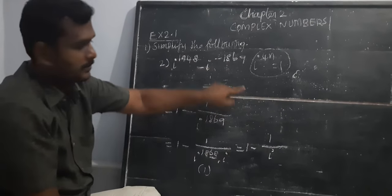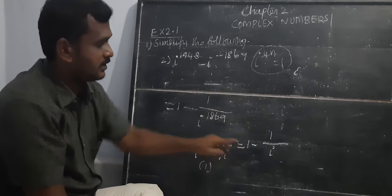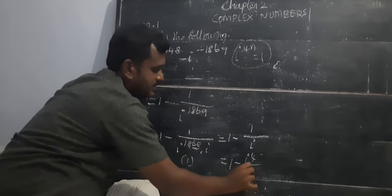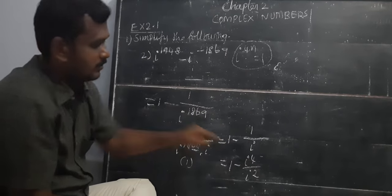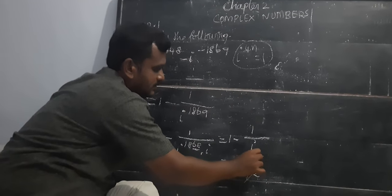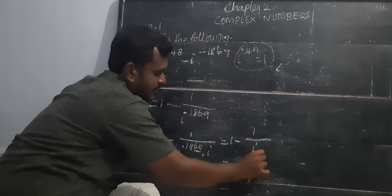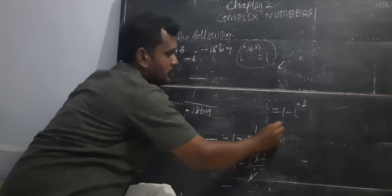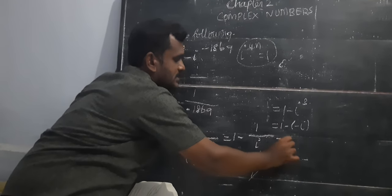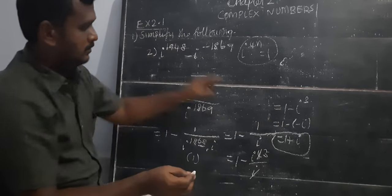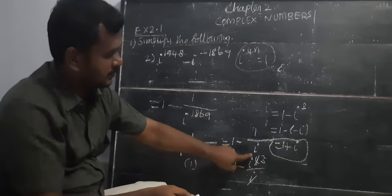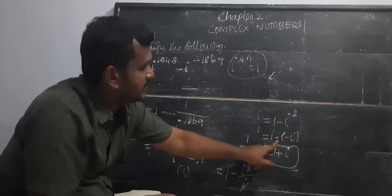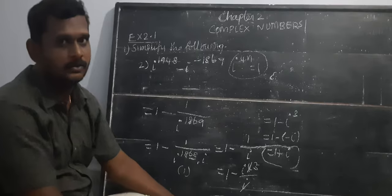Now we need to bring this into the form x plus iy, but 1 minus 1 over i is not yet in that form. So instead of 1 in the numerator, we substitute i power 4, giving i power 4 divided by i squared. The i terms cancel, leaving 1 minus i cubed. Since i cubed equals minus i, we get 1 minus minus i, which equals 1 plus i. This is in the complex form 1 plus i.